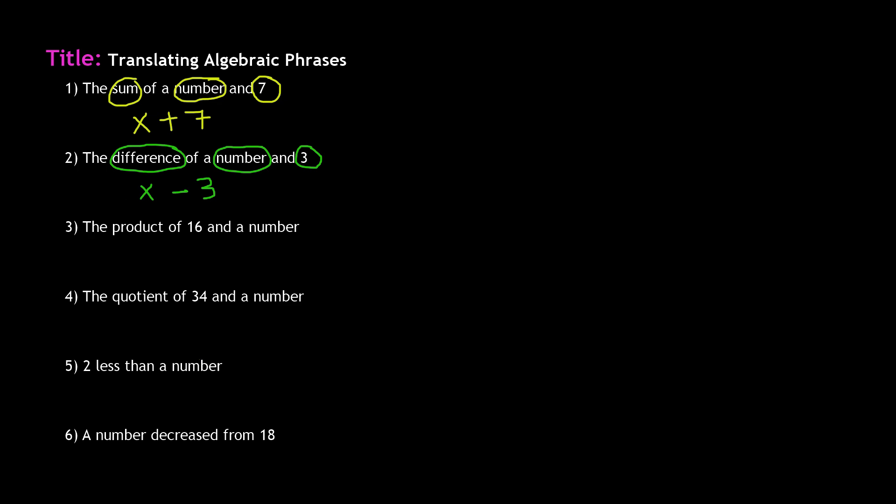Number three: the product of 16 and a number. Product means to multiply. Now remember — when it comes to addition or multiplication, it doesn't really matter which order you write it in. For example, for number one we wrote x plus seven, but we could have also written seven plus x. It doesn't matter for multiplication and addition. But for subtraction and division, the order does matter. Number three deals with multiplication because product refers to multiplication.